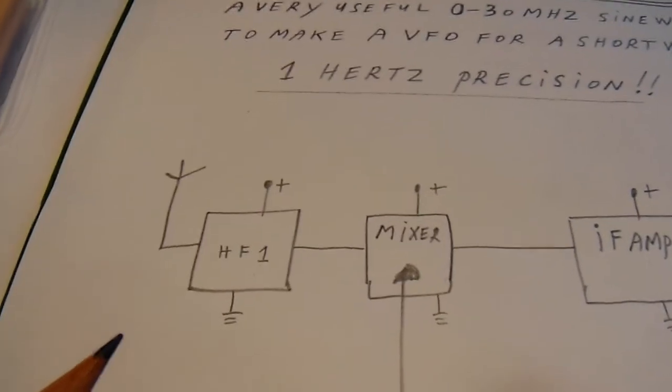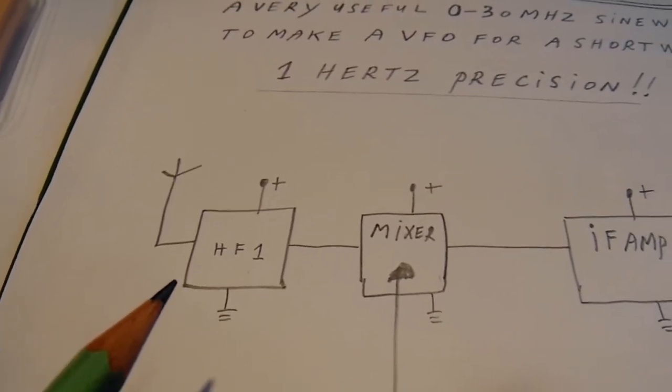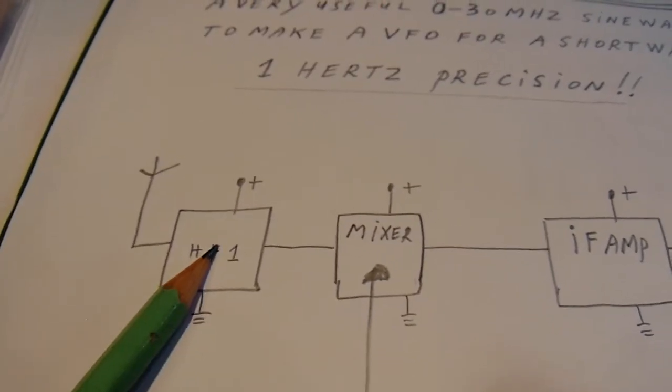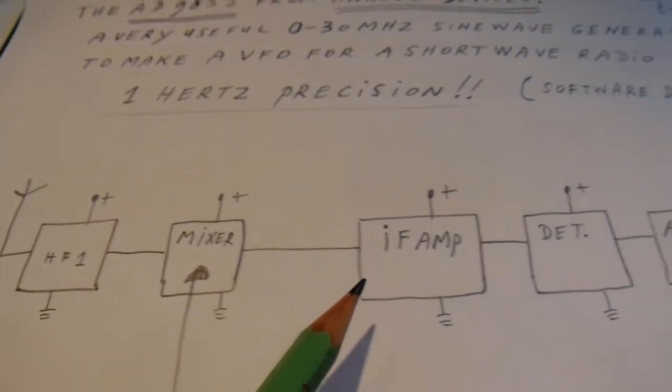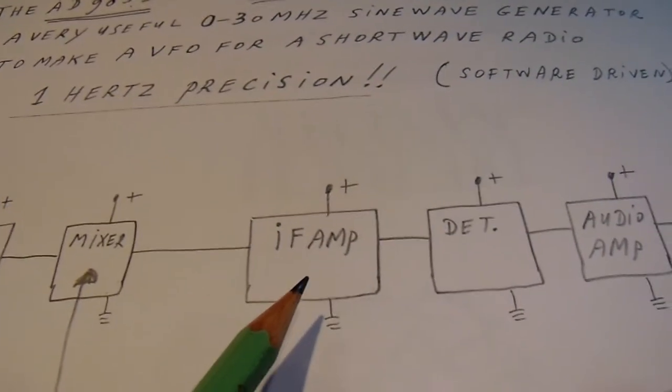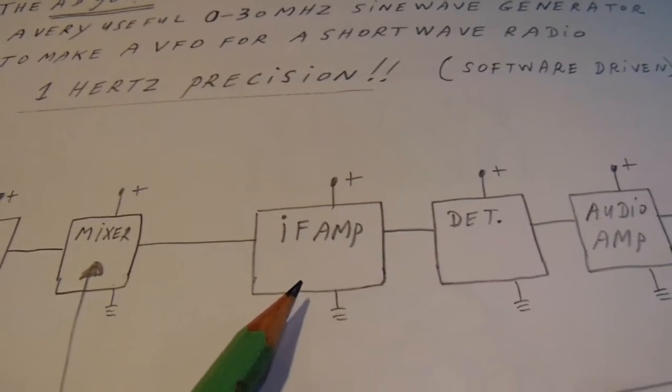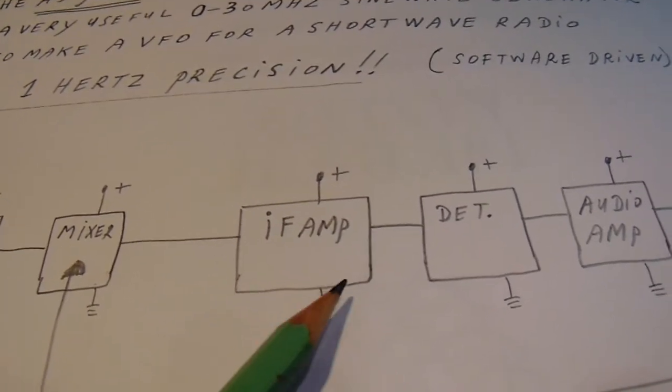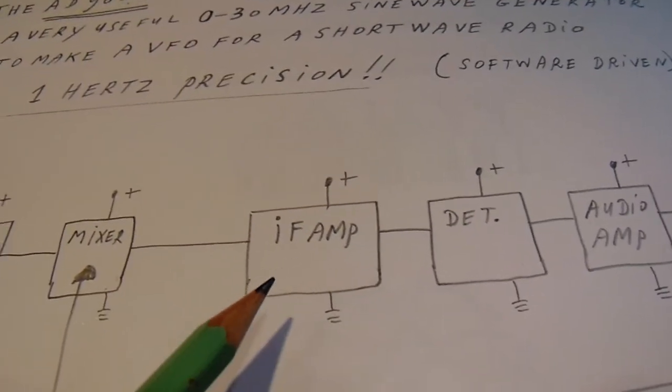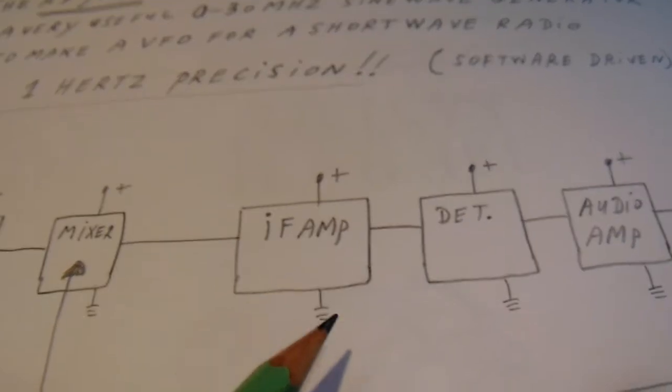Here you see the block schematic from a shortwave radio. First high frequency stage, mixer, IF amp, often 455 kilohertz but in more sophisticated radios the IF frequency is much higher, say 10 megahertz or even 20 megahertz.